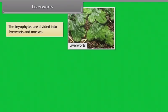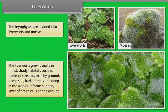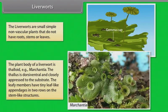The bryophytes are divided into liverworts and mosses. The liverworts grow usually in moist shady habitats such as banks of streams, marshy ground, damp soil, bark of trees and deep in the woods. It forms slippery layer of green cells on the ground. The liverworts are small simple non-vascular plants that do not have roots, stems or leaves. The plant body is thalloid. In marchantia, the thallus is dorsiventral and closely appressed to the substrate. The leafy members have tiny leaf-like appendages in two rows on the stem-like structures.